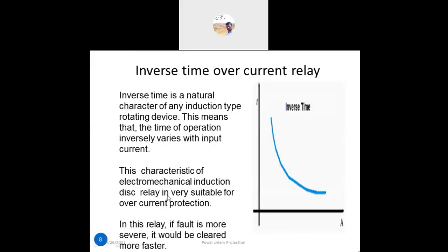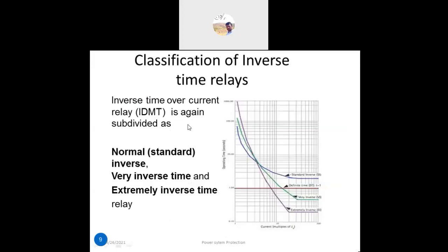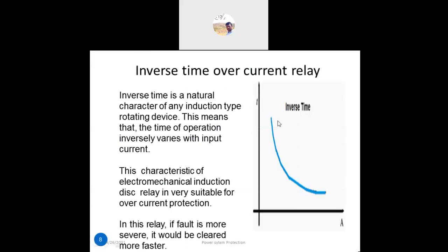If the fault current is high, the operating time will be very less. For example, if a fault occurs at 100 amperes, the trip time will be less. If the current is high, time will be less; if the current is low, time will be high — that is the inverse relationship with time. The pickup current remains the same; the operating time varies inversely with the input current.